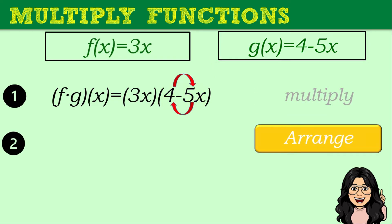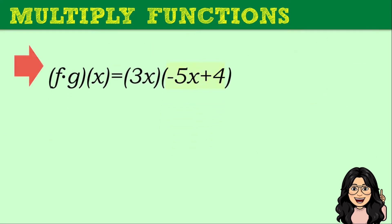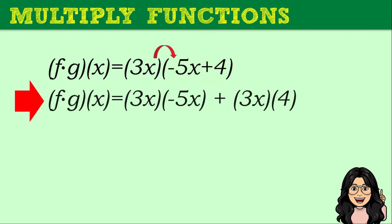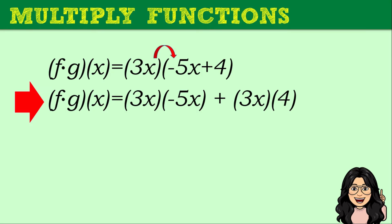Step 2: Arrange. We arrange each polynomial in decreasing order of its degree. So we interchange 4 and negative 5x, giving us negative 5x plus 4. From there, we apply the distributive property of equality — we will multiply 3x to all elements in our binomial.